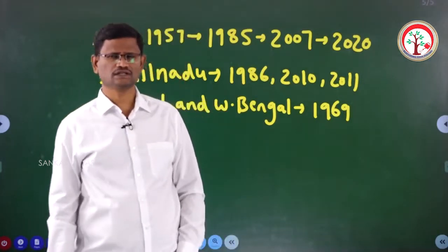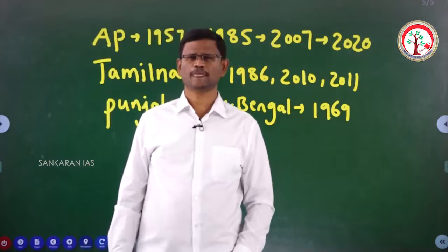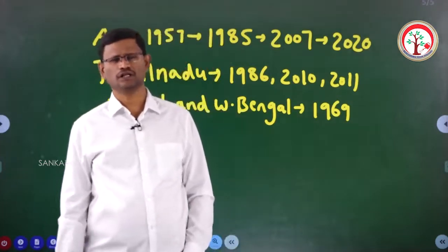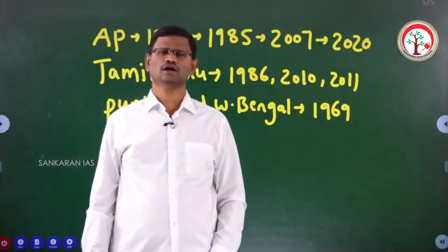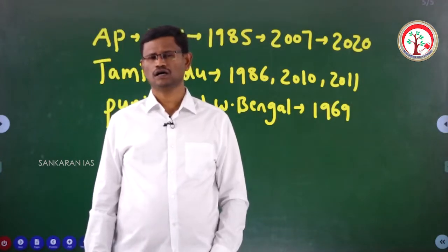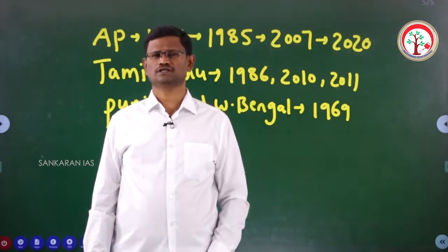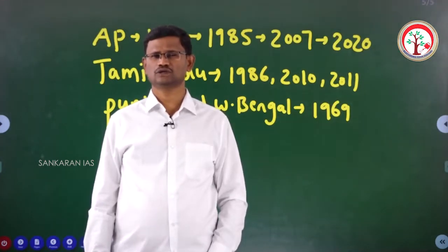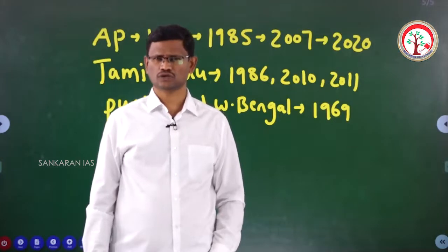What are these six states? Uttar Pradesh, Bihar, Andhra Pradesh, Telangana, Maharashtra, and Karnataka are the six states which have got a bicameral state legislature — both a legislative assembly as well as a legislative council.